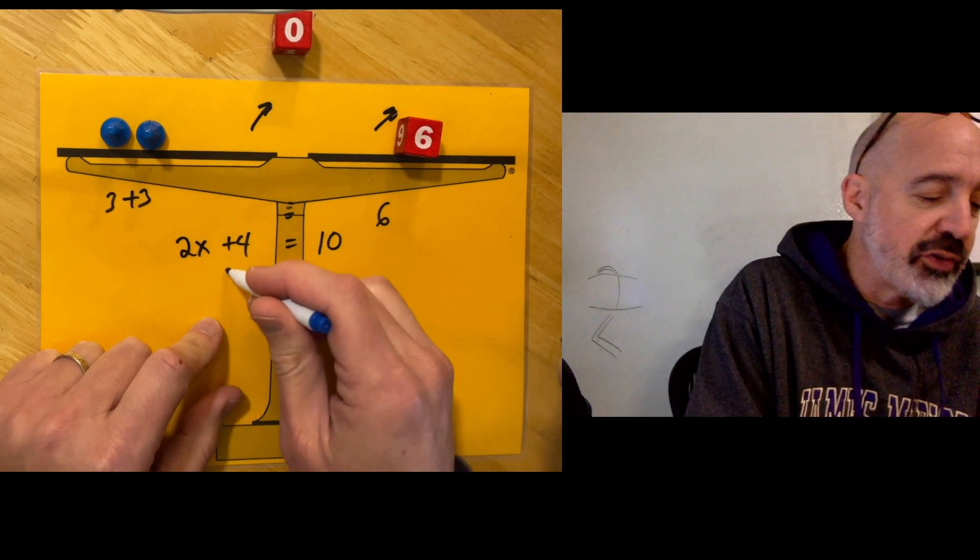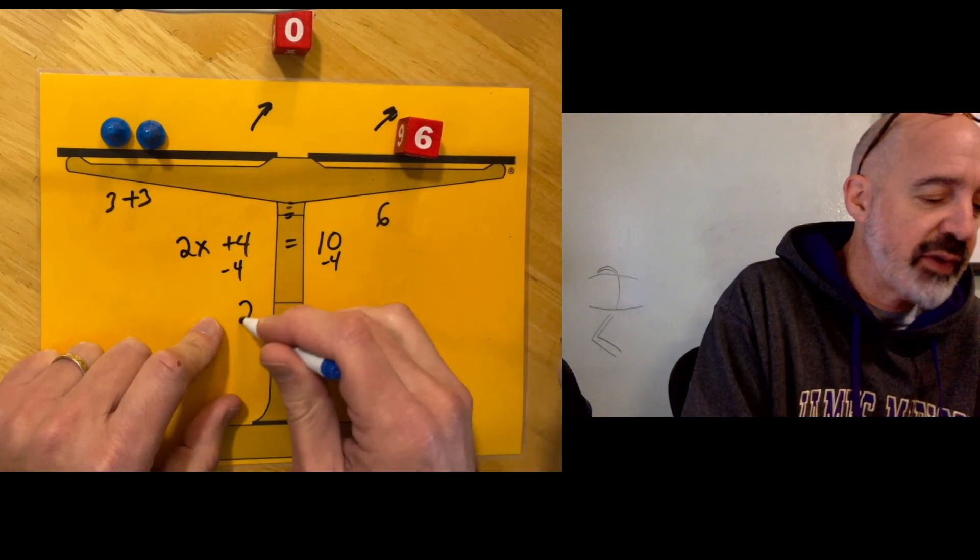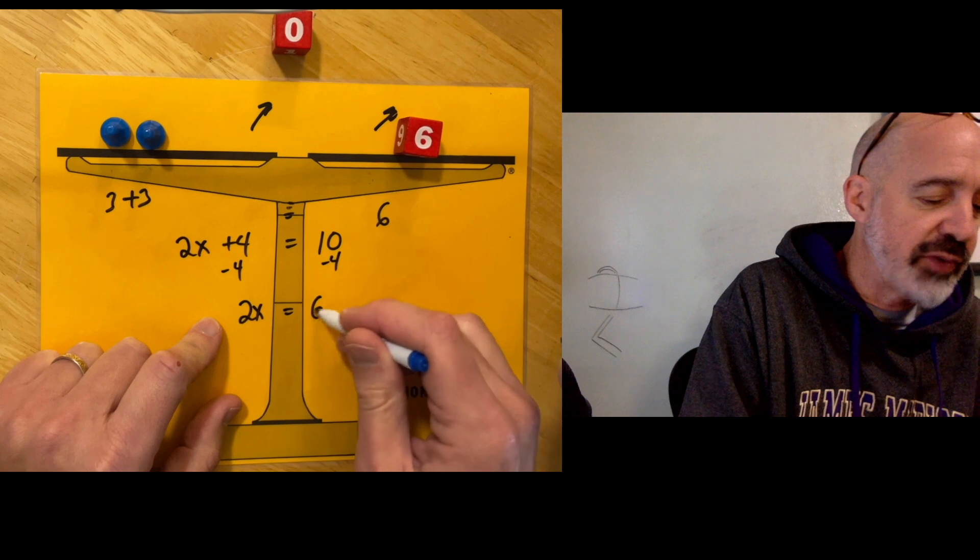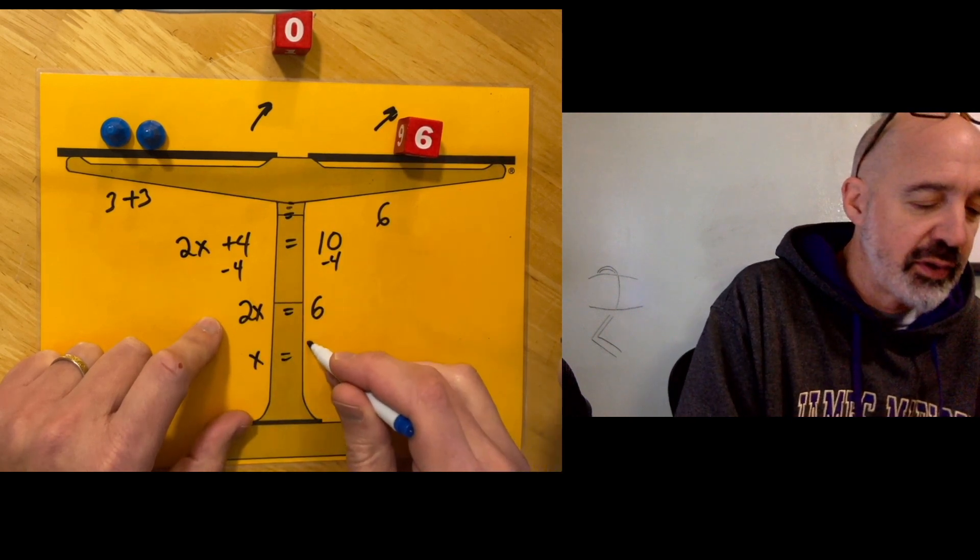So again we subtracted 4 first off of both sides. And we had two pawns equals 6. And then each pawn equals 3.